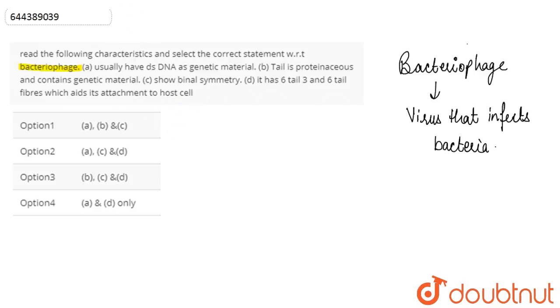The statements given to us about bacteriophage are: (a) they usually have double-stranded DNA as genetic material, (b) tail is proteinaceous and contains genetic material, (c) they show binal symmetry, and (d) it has six tail fibers which aids its attachment to host cell.